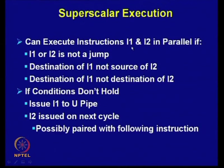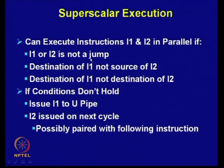Instructions I1 and I2 can be executed in parallel — after fetching, they are stored in a buffer, then checked for which pairs can be executed in U-pipe and V-pipe — if instruction 2 is not a jump, the destination of I1 is not the source of I2, and the destination of I1 is not the destination of I2.